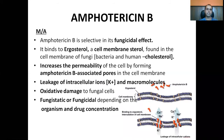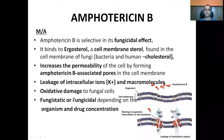The mechanism of action of amphotericin B: it is selective in its fungicidal effects. It binds to ergosterol, which is a membrane sterol found in the cell membrane of fungi — unlike bacteria and humans which have cholesterol. It increases the permeability of the cell by forming amphotericin B-associated pores, via which there is leakage of intracellular ions and molecules. This leakage, combined with oxidative damage to the fungal cells, leads to killing or inhibiting fungal growth depending on the organism and concentration.